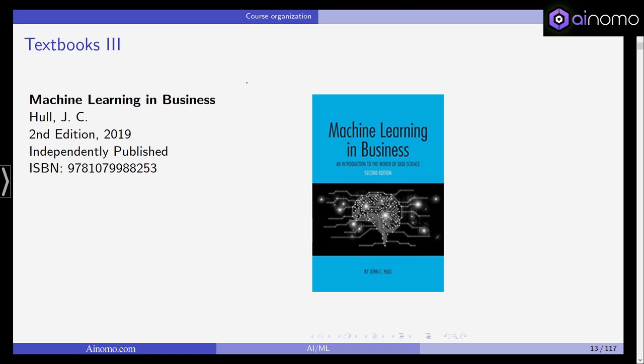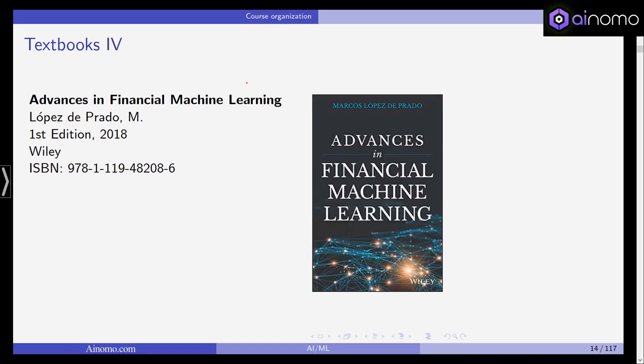The fourth one is Advances in Financial Machine Learning by Lopez de Prado. This one is very, very applied. And it has a strong focus on, I would say, trading and algorithmic trading. It is a good companion textbook in addition to the Hastie and Tibshirani textbooks. Again, as the cover and the title suggests, it is focused on finance and financial economics primarily. But it focuses on a subset of problems in finance that I would consider is important, but it doesn't really cover the whole range of topics that we will be talking about in this class. So it's a good additional read, I would say.